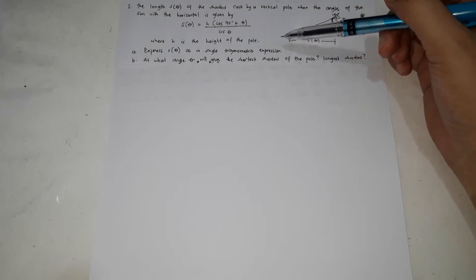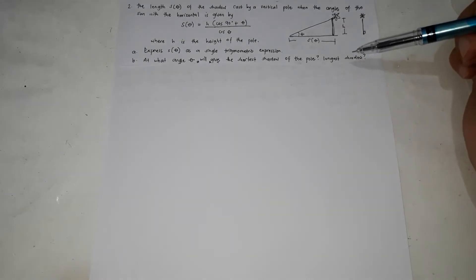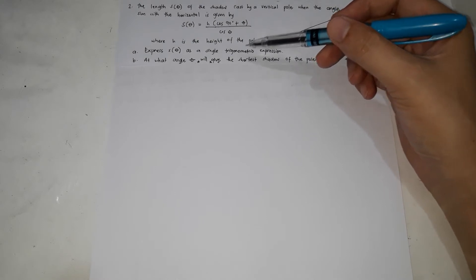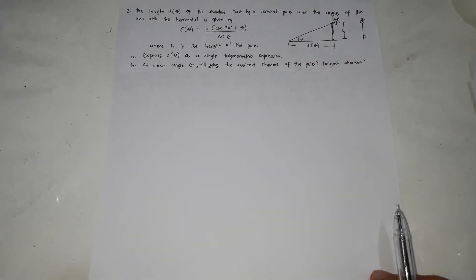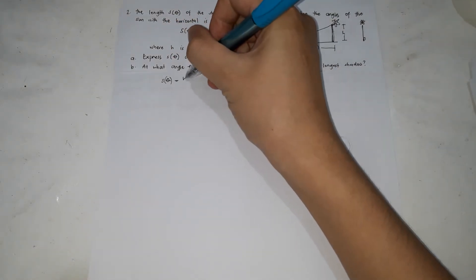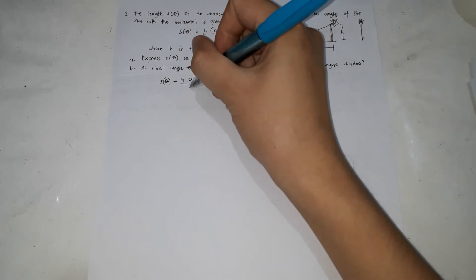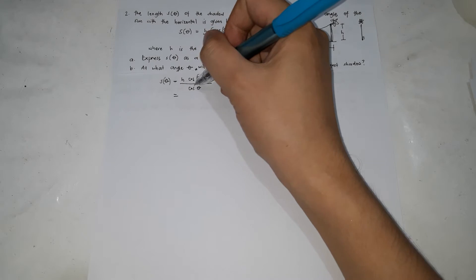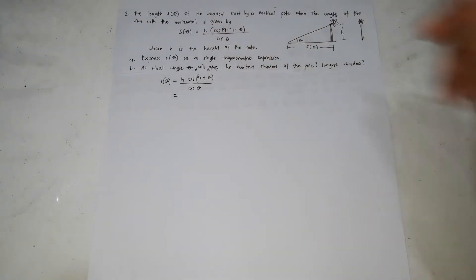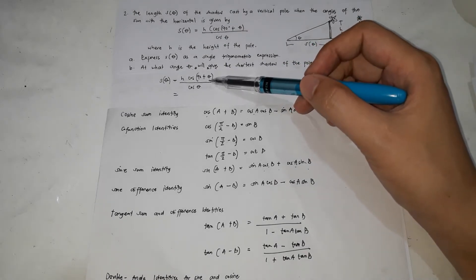Letter B asks: at what angle will the shadow be shortest, and what gives the longest shadow? First, we're going to simplify S(θ) = H·cos(90° + θ) / cos(θ) into a single trigonometric expression. We're going to check which identity we can use — we know it involves cosine(90° + θ).